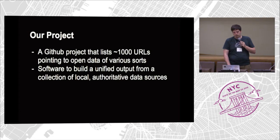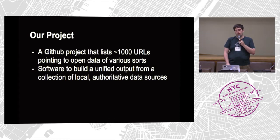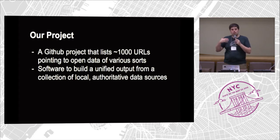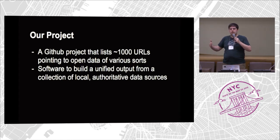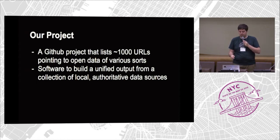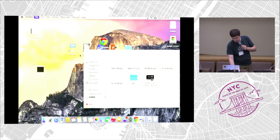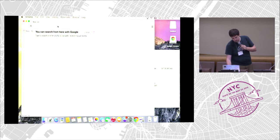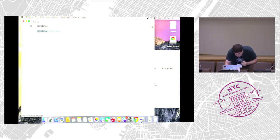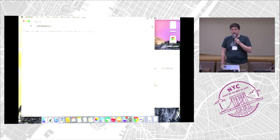Our project is a GitHub project that lists around a thousand URLs pointing out into the internet. We have software that goes through those files, downloads the data, does some transformation on that data, mushes it all together into a gigantic CSV file, and outputs the result. You can download it at our website.